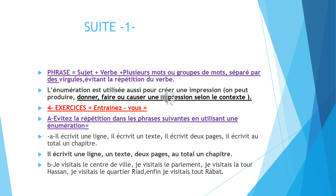La phrase est construite ainsi: le sujet, plus le verbe, plus plusieurs mots ou groupes de mots séparés par des virgules, évitant la répétition du verbe. On peut aussi éviter la répétition du sujet. L'énumération est utilisée aussi pour créer une impression — on peut produire, donner, faire ou causer une impression selon le contexte, comme on a déjà vu dans les exemples précédents.